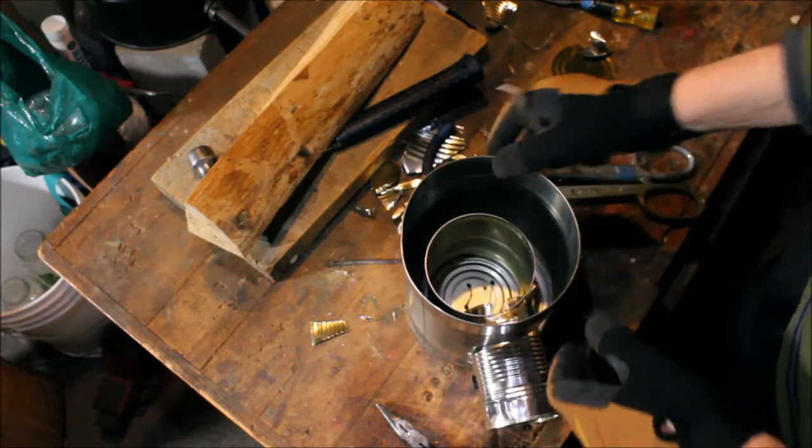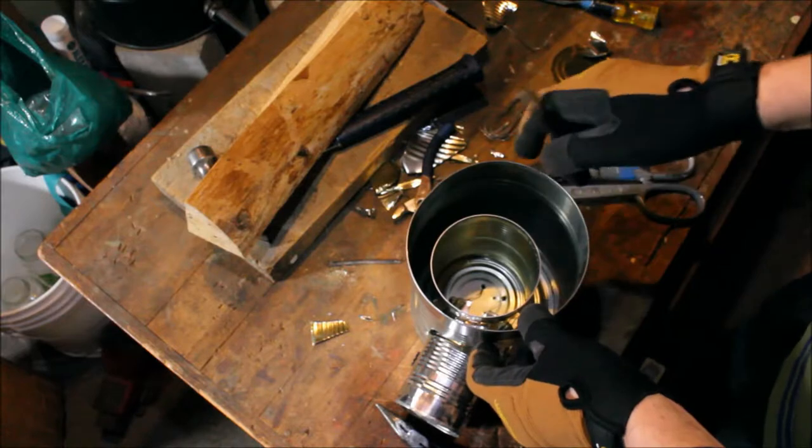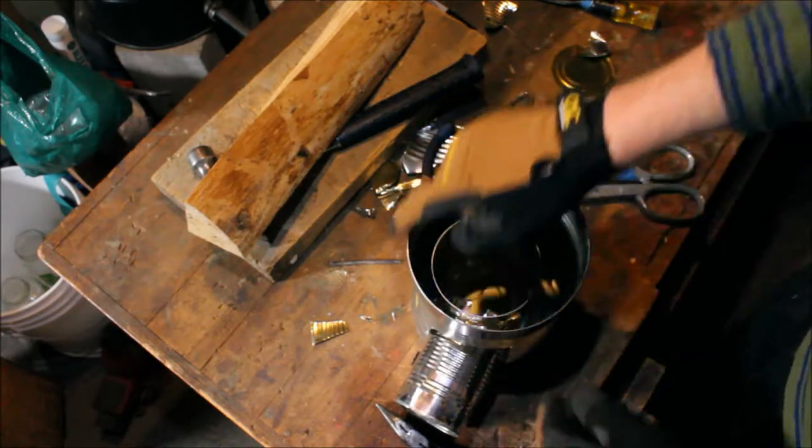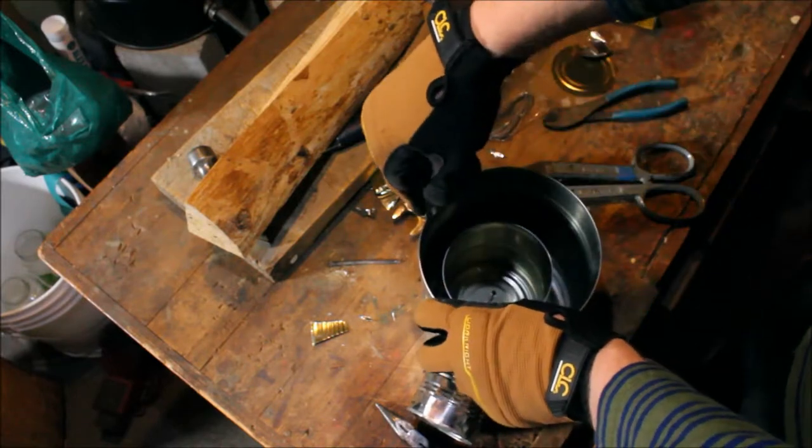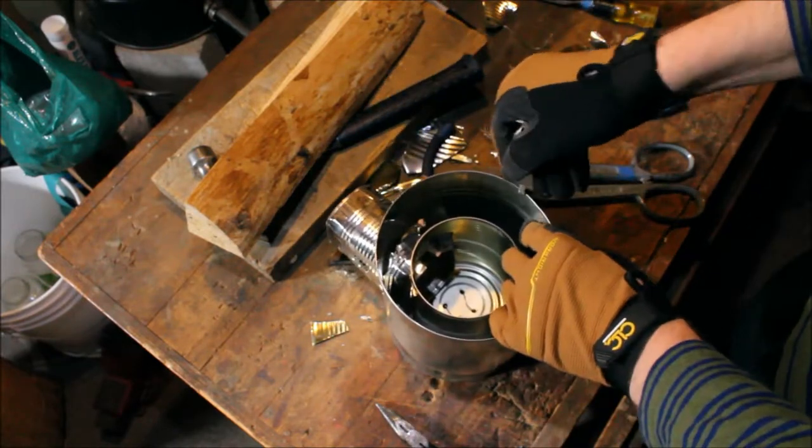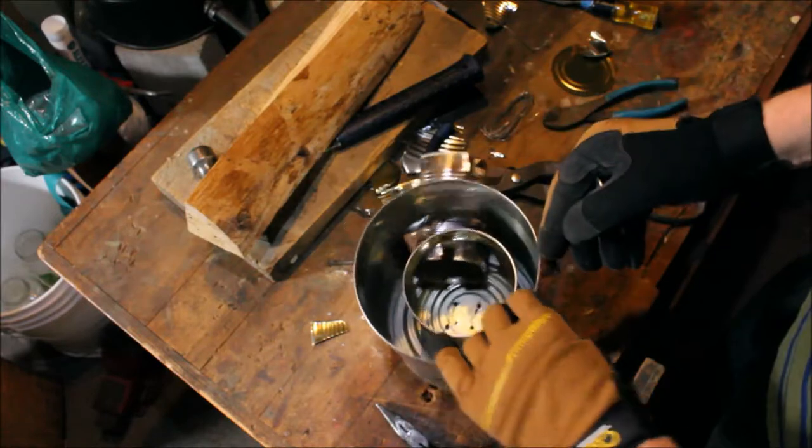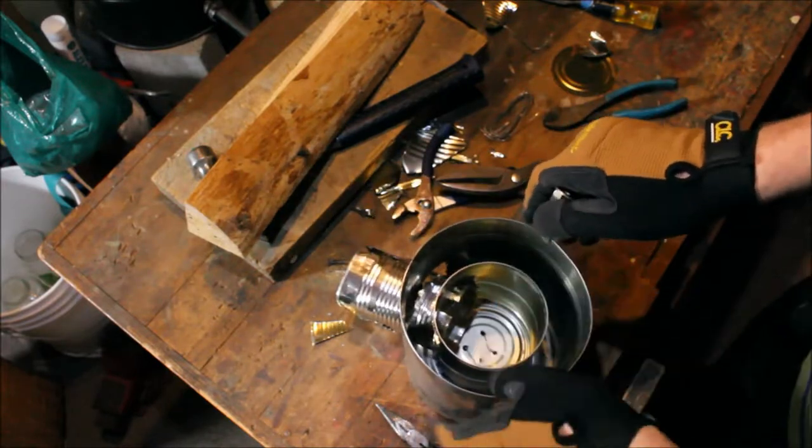But the next step is cutting vent holes for the smoke to come out while resting a pot on this rim. And this is really important and you should make them as close together as you can without compromising the structure.